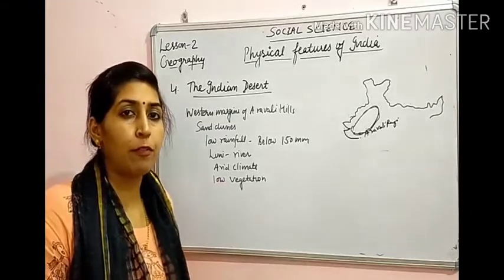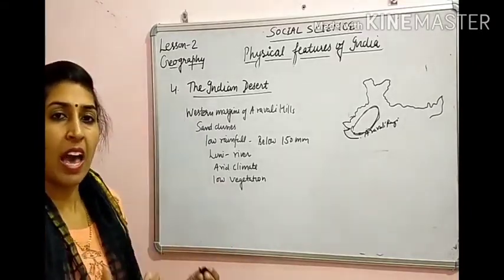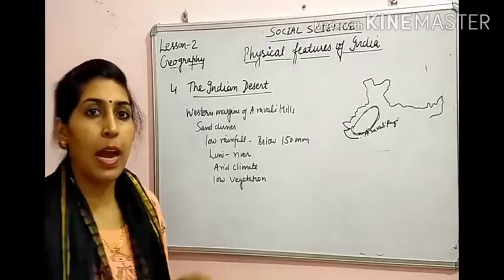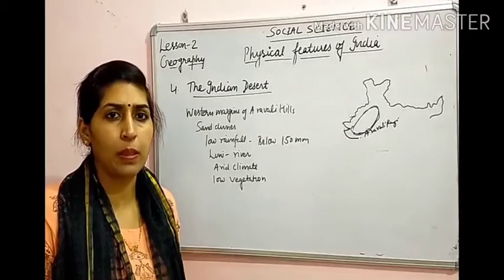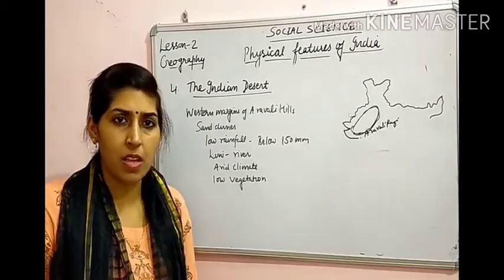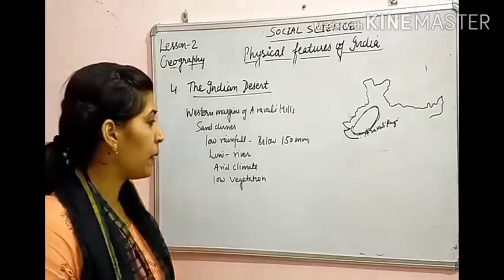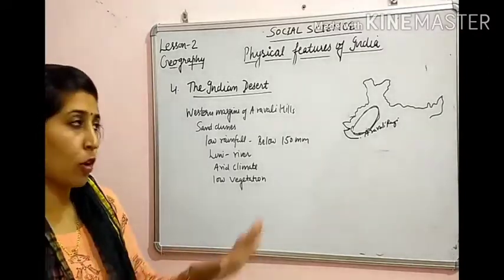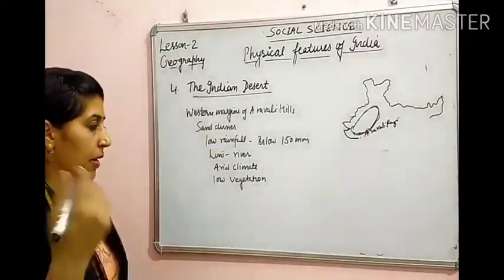Indian Desert में rainfall 150 mm से भी कम होती है, arid climate है — temperature बहुत ज्यादा और rainfall बहुत कम। इसकी वजह से vegetation भी बहुत कम है — cactus plants और bushes देखने को मिलते हैं। Luni is the major river of this region.